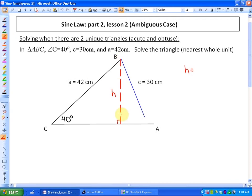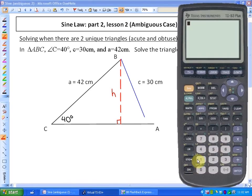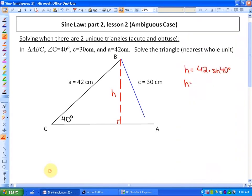The height of this triangle is going to be 42 times the sine of 40. You can look at the previous lesson for the justification for that, or it comes from primary trig ratios. So if I do that, 42 times the sine of 40, I get roughly 27. So the height of this triangle is 27 centimeters.